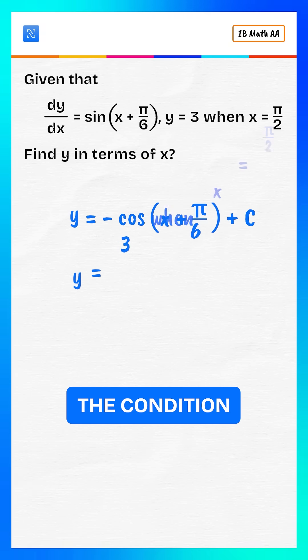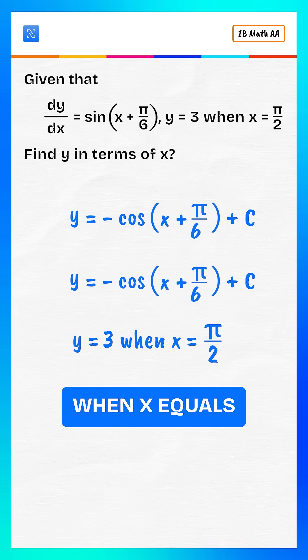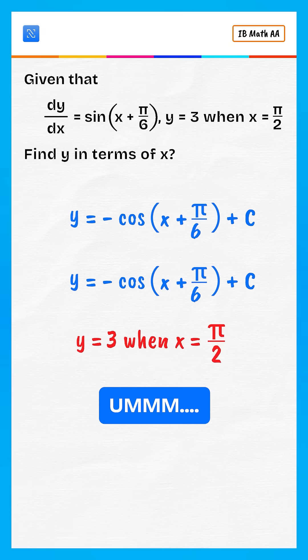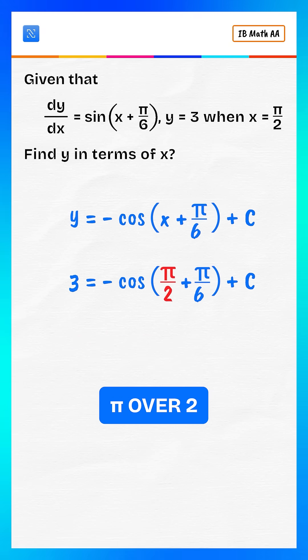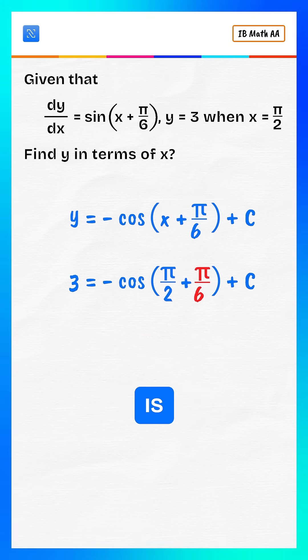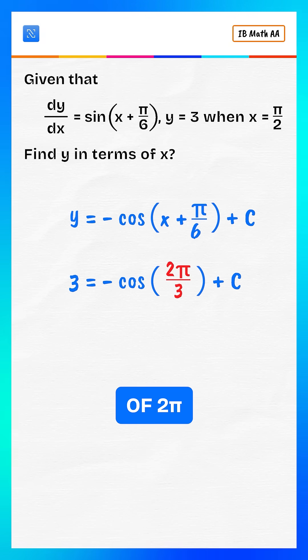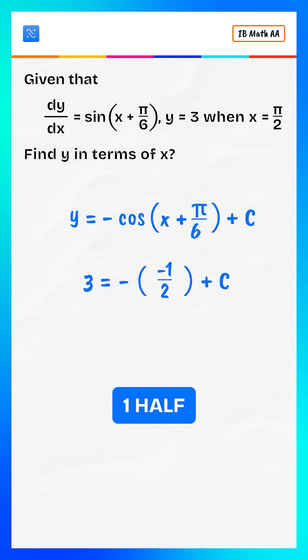Now apply the condition y equals 3 when x equals pi over 2. Pi over 2 plus pi over 6 is 2 pi over 3, and cos of 2 pi by 3 is negative 1 half.